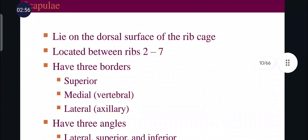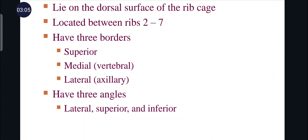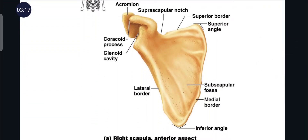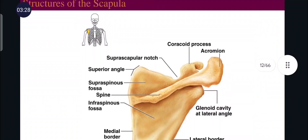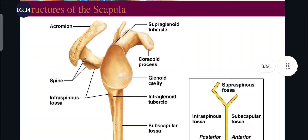The next bone of the pectoral girdle is the scapula. It lies on the dorsal surface of the rib cage, located between ribs 2 to 7. It has three borders — superior, medial, and lateral — and three angles — lateral, superior, and inferior. The scapula consists of the acromion process, coracoid process, and glenoid cavity. The posterior aspect shows the glenoid cavity, acromion process, and coracoid process.